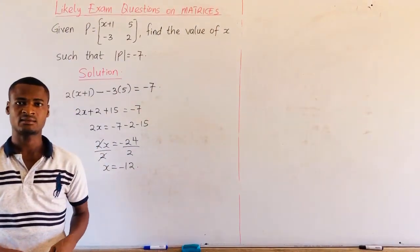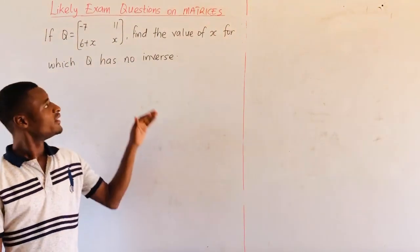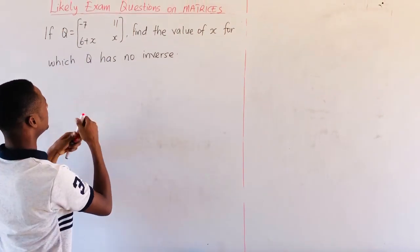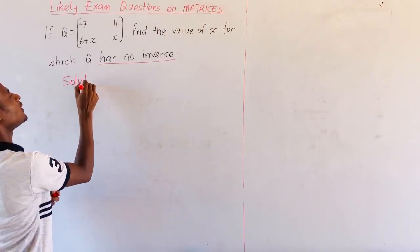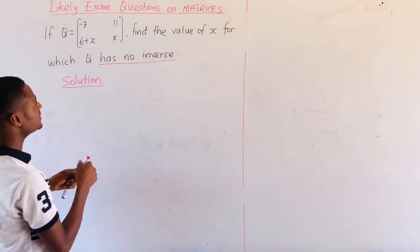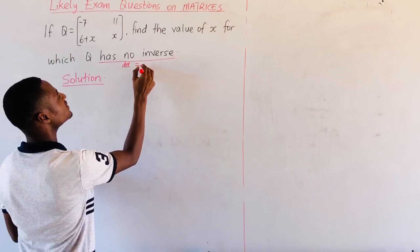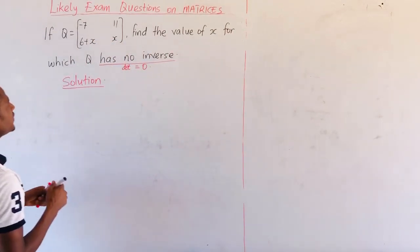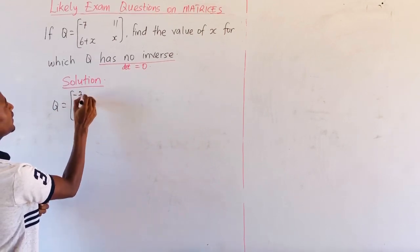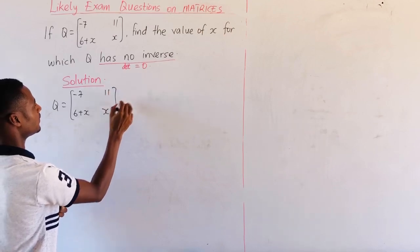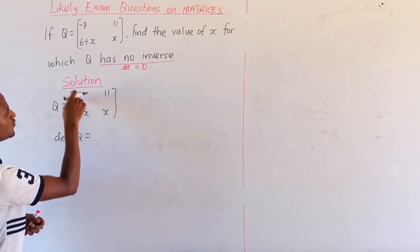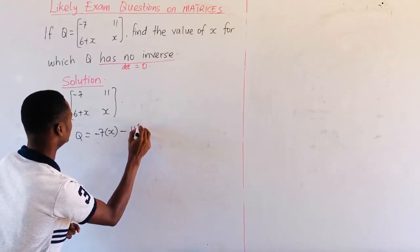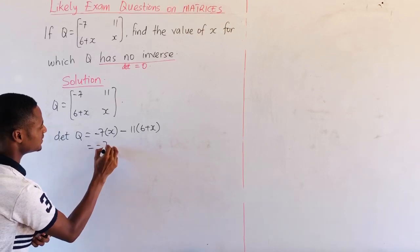We'll take our last example. In this example, we want to find the value of x for which the given matrix K has no inverse. If a matrix has no inverse, it simply means that the determinant of that matrix is equal to 0. So we'll find the determinant of K and equate it to 0. The determinant equals the product of the leading diagonal minus the product of the minor diagonal, giving us terms involving 11 and (6 plus x), which simplifies to negative 7x.